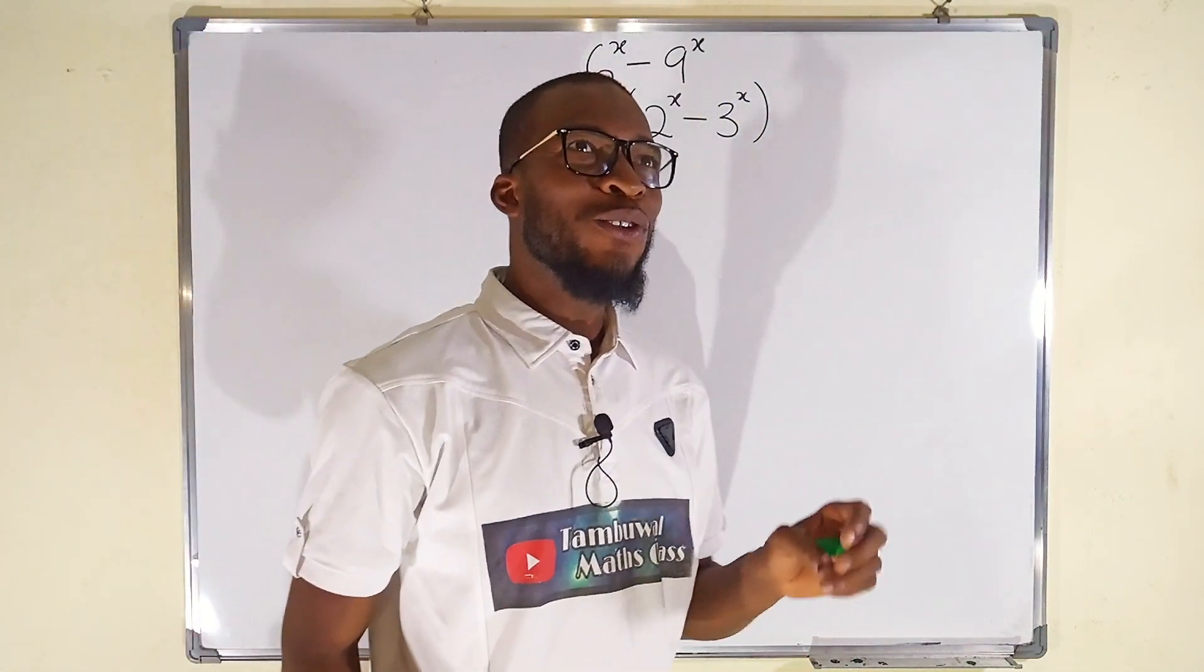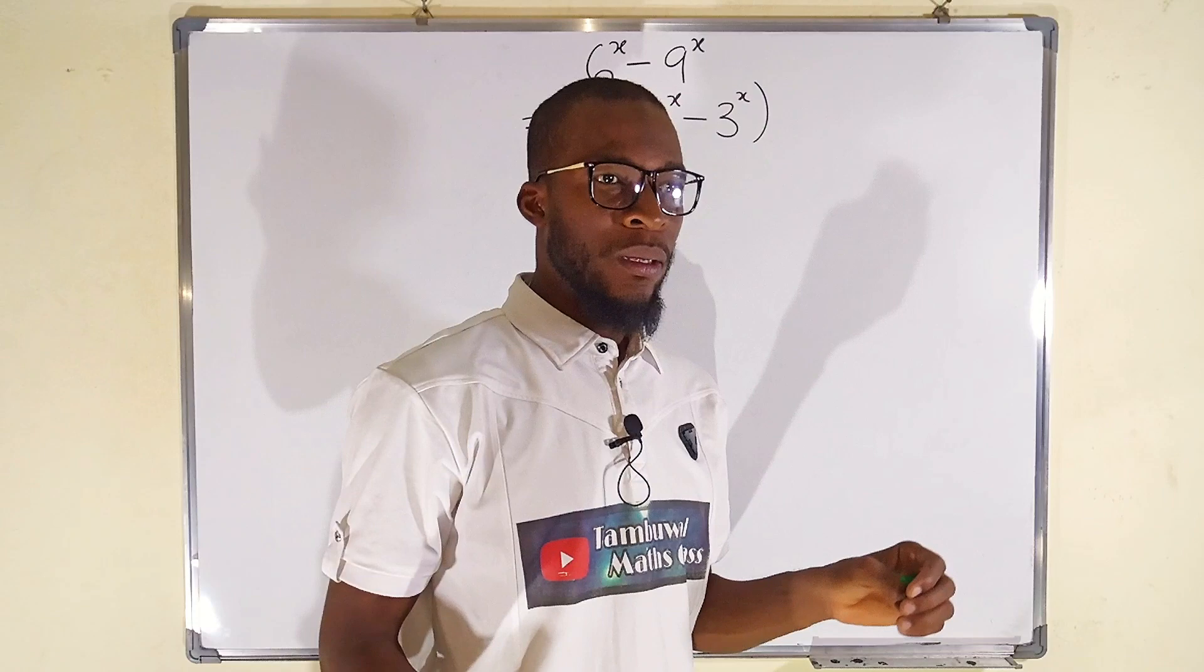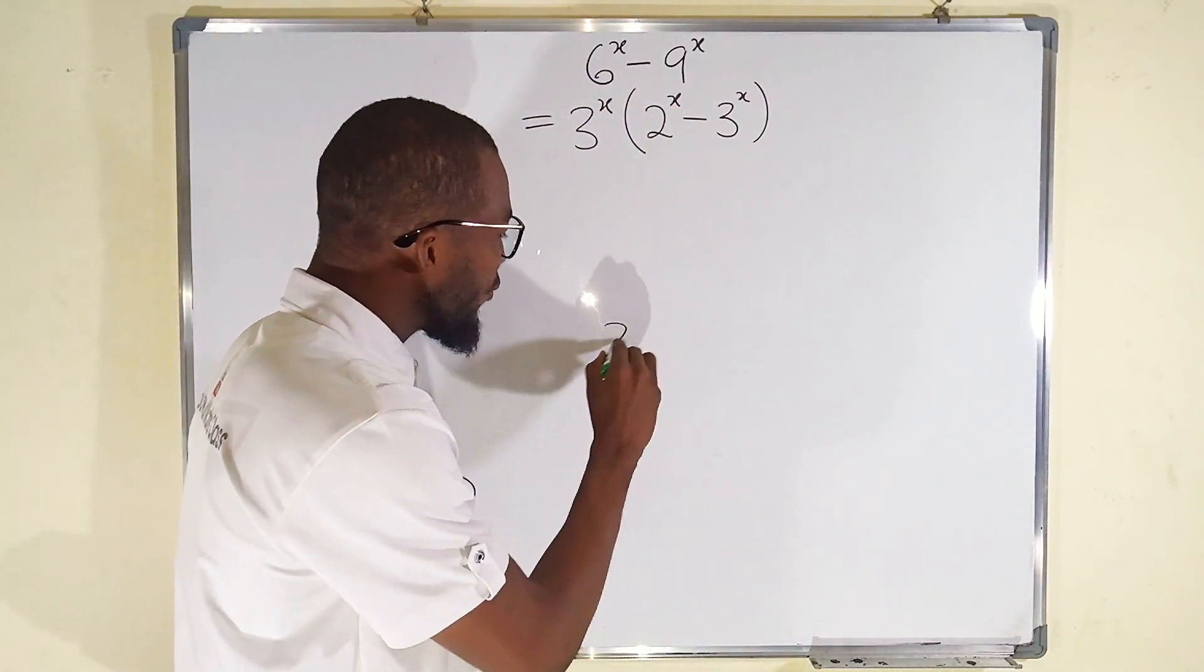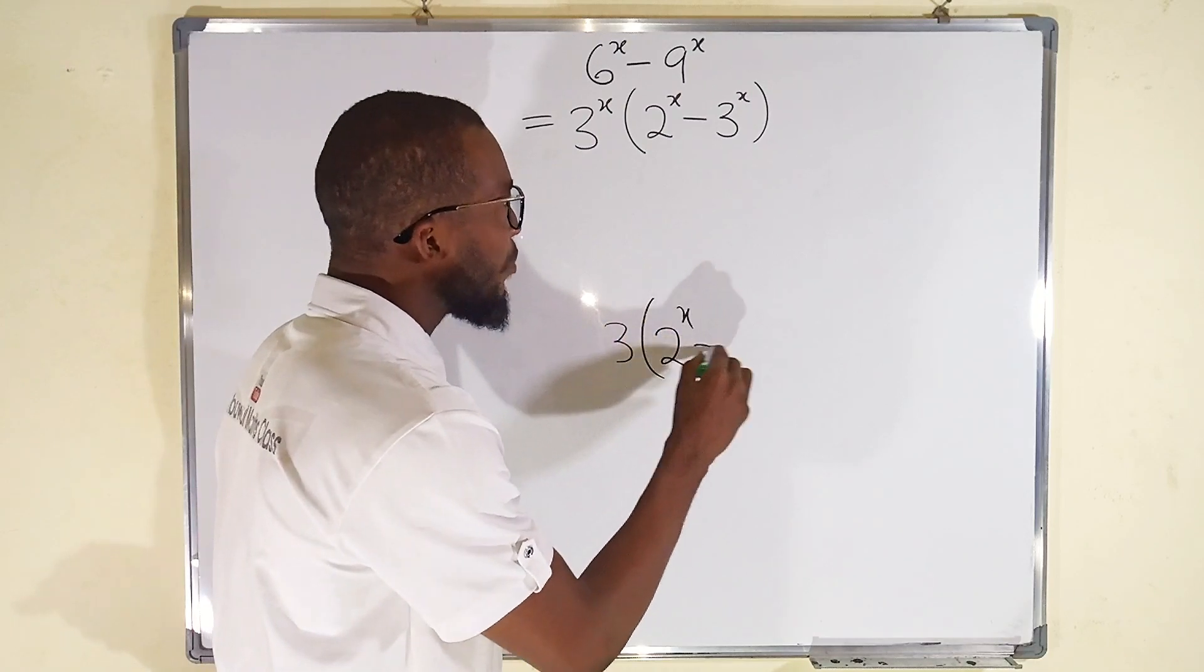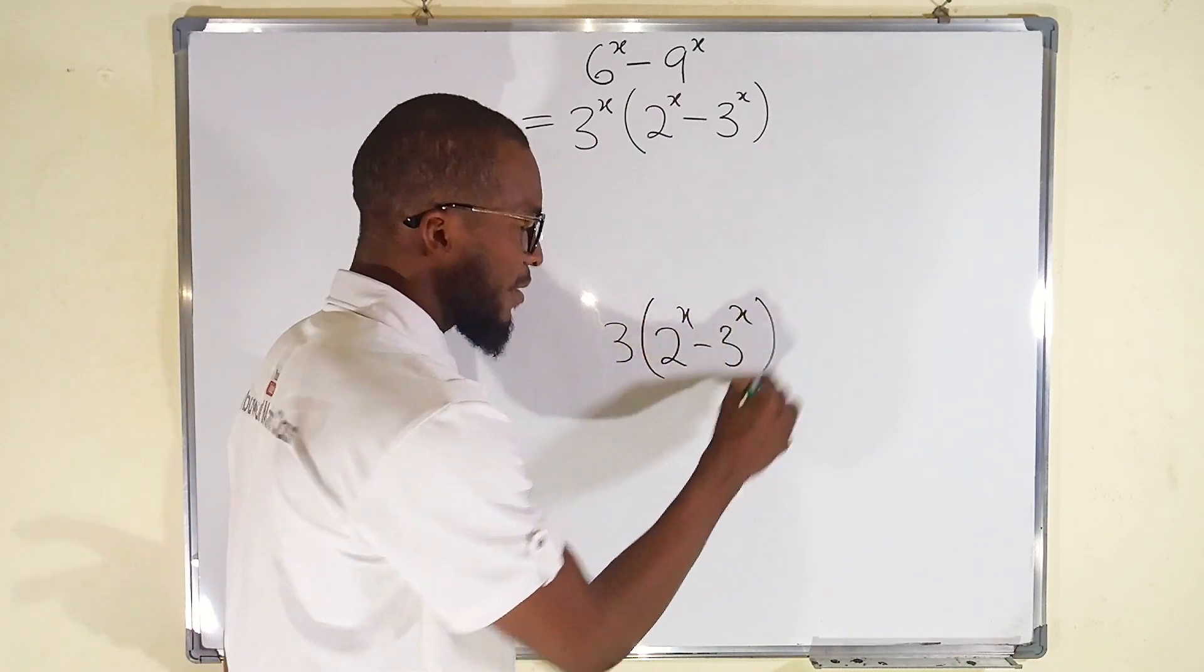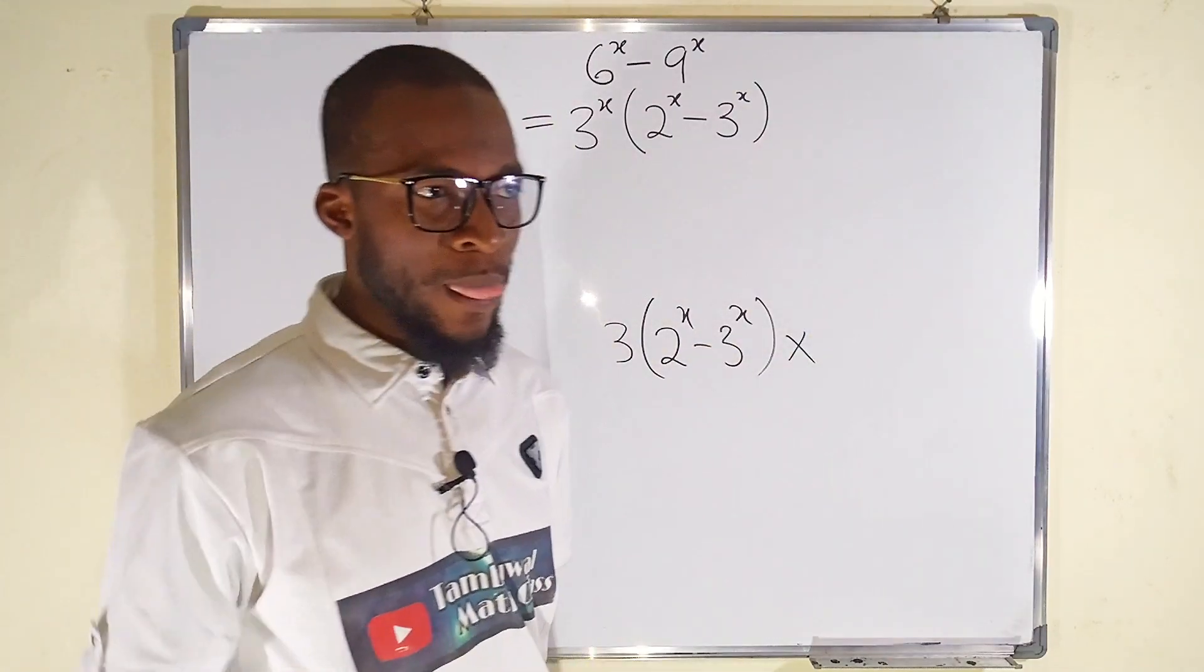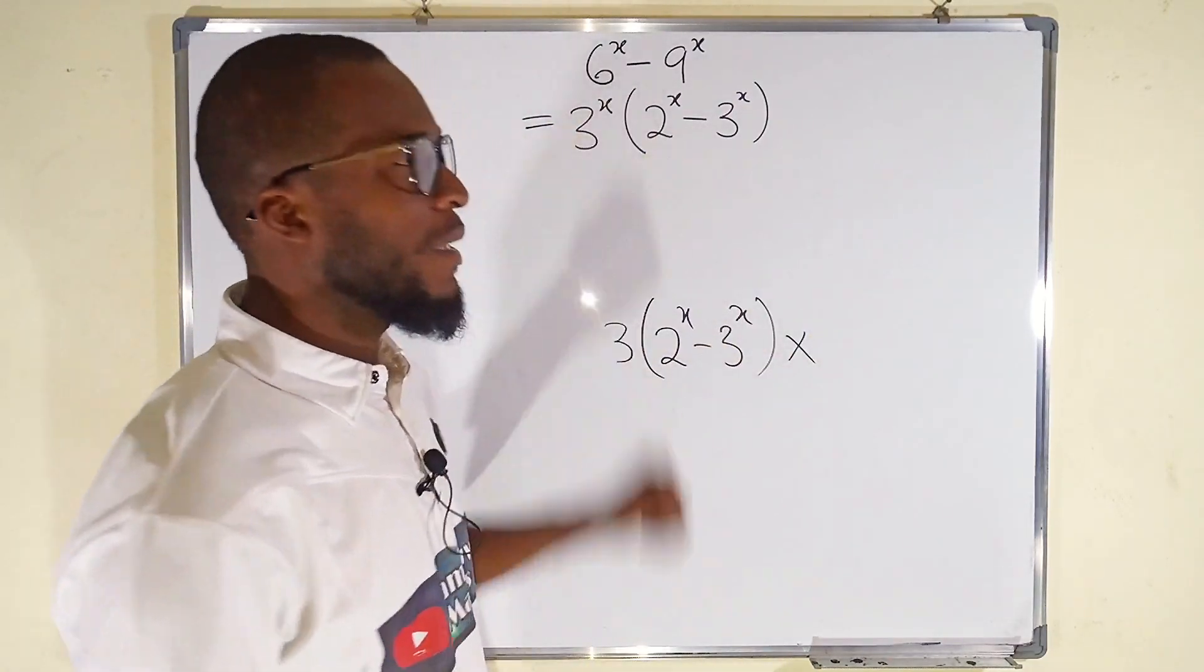I recall two or three people said no, this is not how it should be. It should be 3 multiplied by 2^x minus 3^x. But this is very wrong. Honestly, this is not true. Let me make it clear for you.